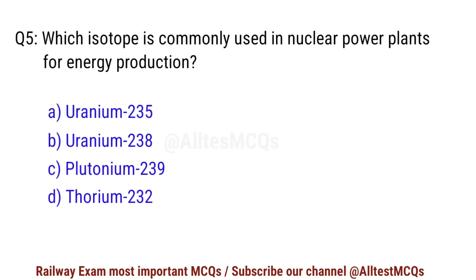Q5. Which isotope is commonly used in nuclear power plants for energy production? Right option is A. Uranium-235.